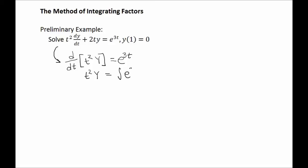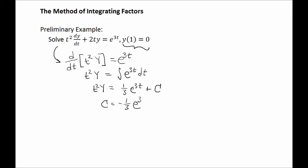On the right side, we'd get the anti-derivative of e to the 3t, which we will write as one-third e to the 3t plus an unknown constant of integration c. So we have t squared y equals one-third e to the 3t plus c. Now we could use the given initial condition to solve for c. If you plug in 1 for t and 0 for y, you're going to be able to deduce that c is equal to negative one-third e cubed.